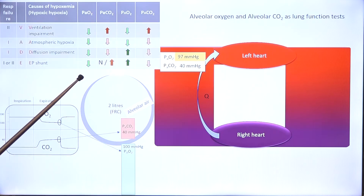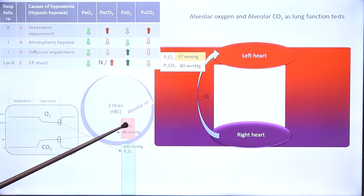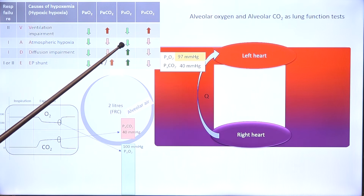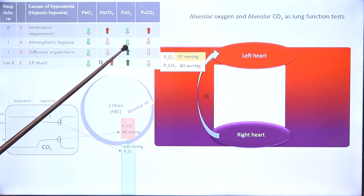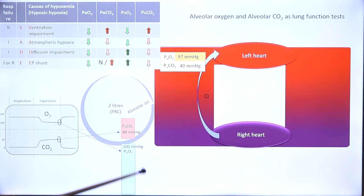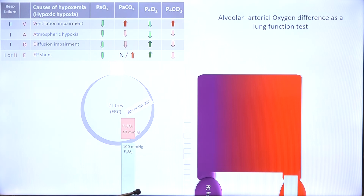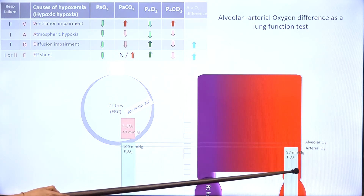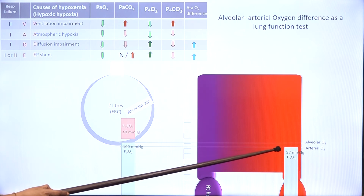We have seen this table already. We learnt that alveolar oxygen would be low in ventilation impairment and atmospheric hypoxia, and would in fact be higher than normal in diffusion impairment and extrapulmonary shunt. Regarding the alveolar-arterial oxygen difference: arterial oxygen is slightly lower than alveolar oxygen in the general case, and the difference between the two is computed as the alveolar-arterial oxygen difference.